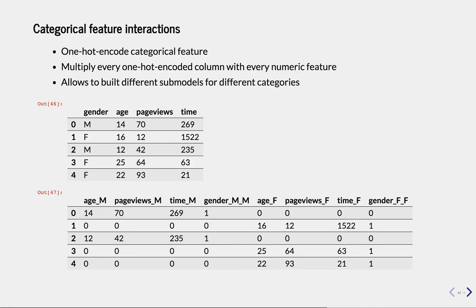You can do the same thing for categorical features. This is useful in many situations where you want your model to learn different groups in your data differently. For example, consider a dataset of people where we have their gender, their age, the number of page views on our website, and the time they spent on our website. We can learn one model over all of this data.